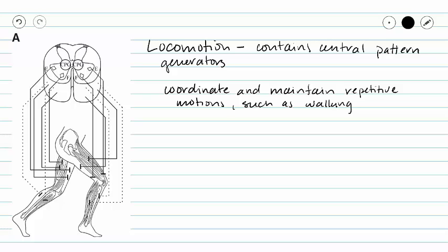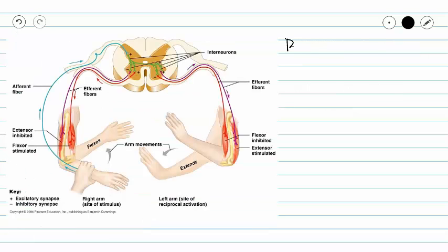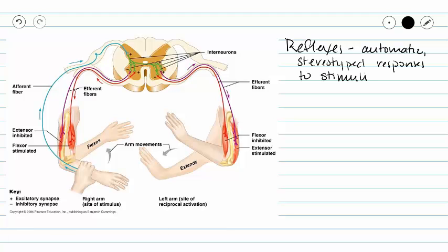And lastly we have reflexes. Reflexes are really important to posture, to motor coordination and protective responses to pain or injury. Reflexes can be defined as automatic stereotyped responses to stimuli. We will talk about reflexes in later videos in this series.